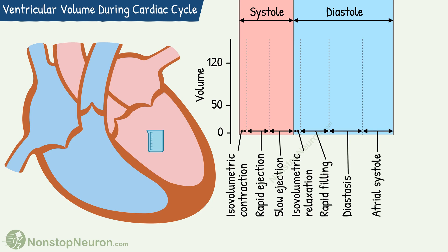We will start with the systole. By the end of the diastole, ventricular volume has reached the maximum. First in the systole is isovolumetric contraction. During this, all valves are closed and there is no flow of blood, so there is no change in the ventricular volume. At the end of the isovolumetric contraction, semilunar valves open and the ejection phase starts.